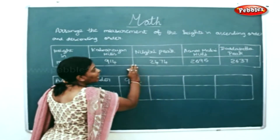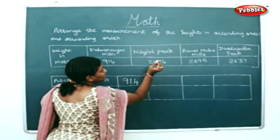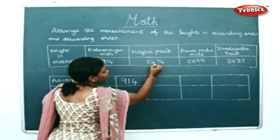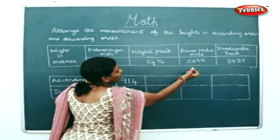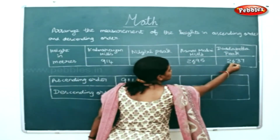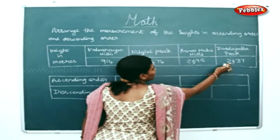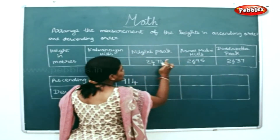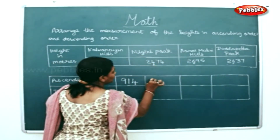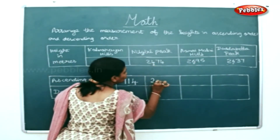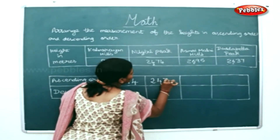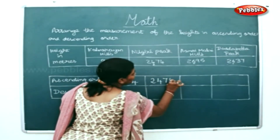Next, we will compare the hundreds place. In the hundreds place, Nilgiri has 4, Annamalai has 6, and Dodabeta has 6 again. Comparing 6, 6, and 4 — 4 is the next smallest. So we will write 2,4,7,4 here.